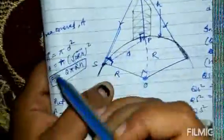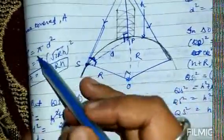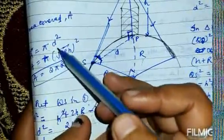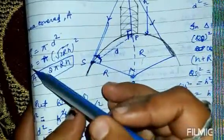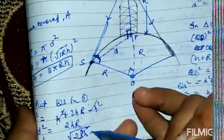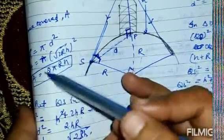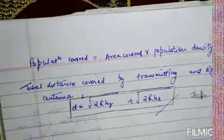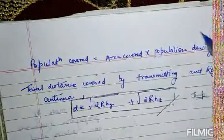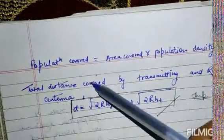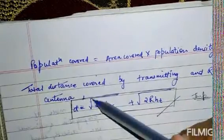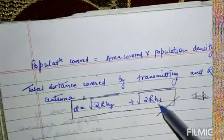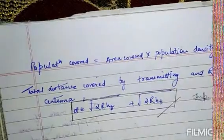The area covered by the antenna is A = πd² = π(2Rh). The population covered equals area covered multiplied by population density. The total distance covered by both transmitting and receiving antennas is d = √(2Rh_T) + √(2Rh_R), where h_T and h_R are the heights of the transmitting and receiving antennas respectively.